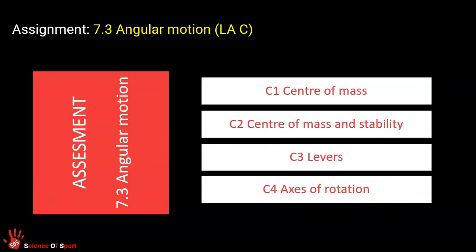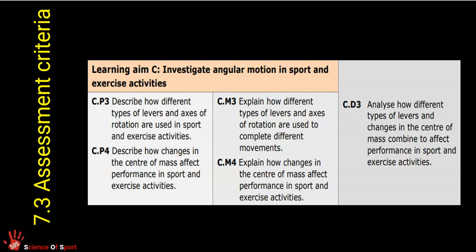It's quite a broad unit. Just before we finish, this is the assessment criteria for 7.3, the third assignment. Describe levers and axes. Describe center of mass and how we manipulate it. Explain or analyze. Hopefully you're all pushing to aim for at least the merit, if not the distinction, criteria in this unit.